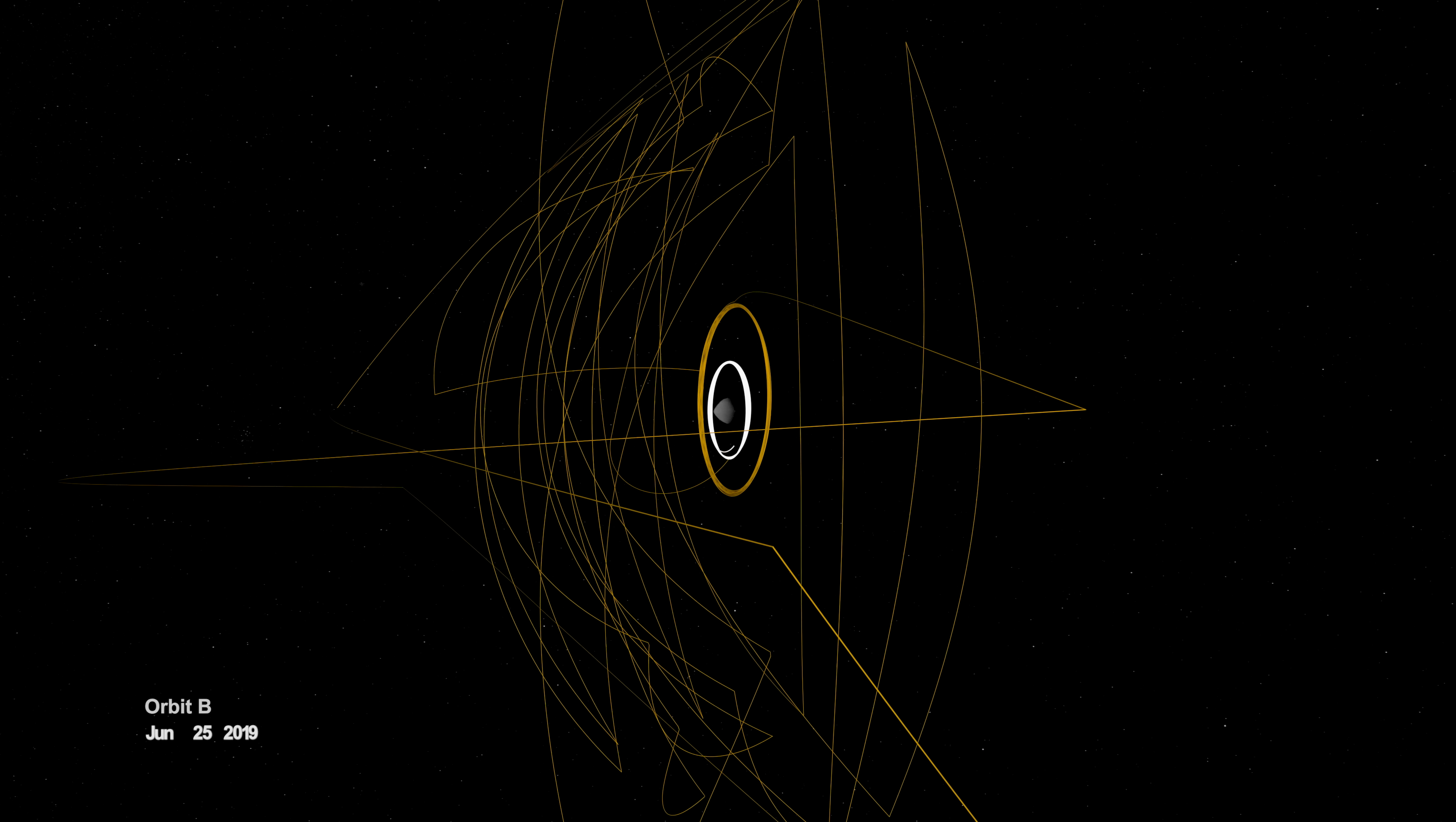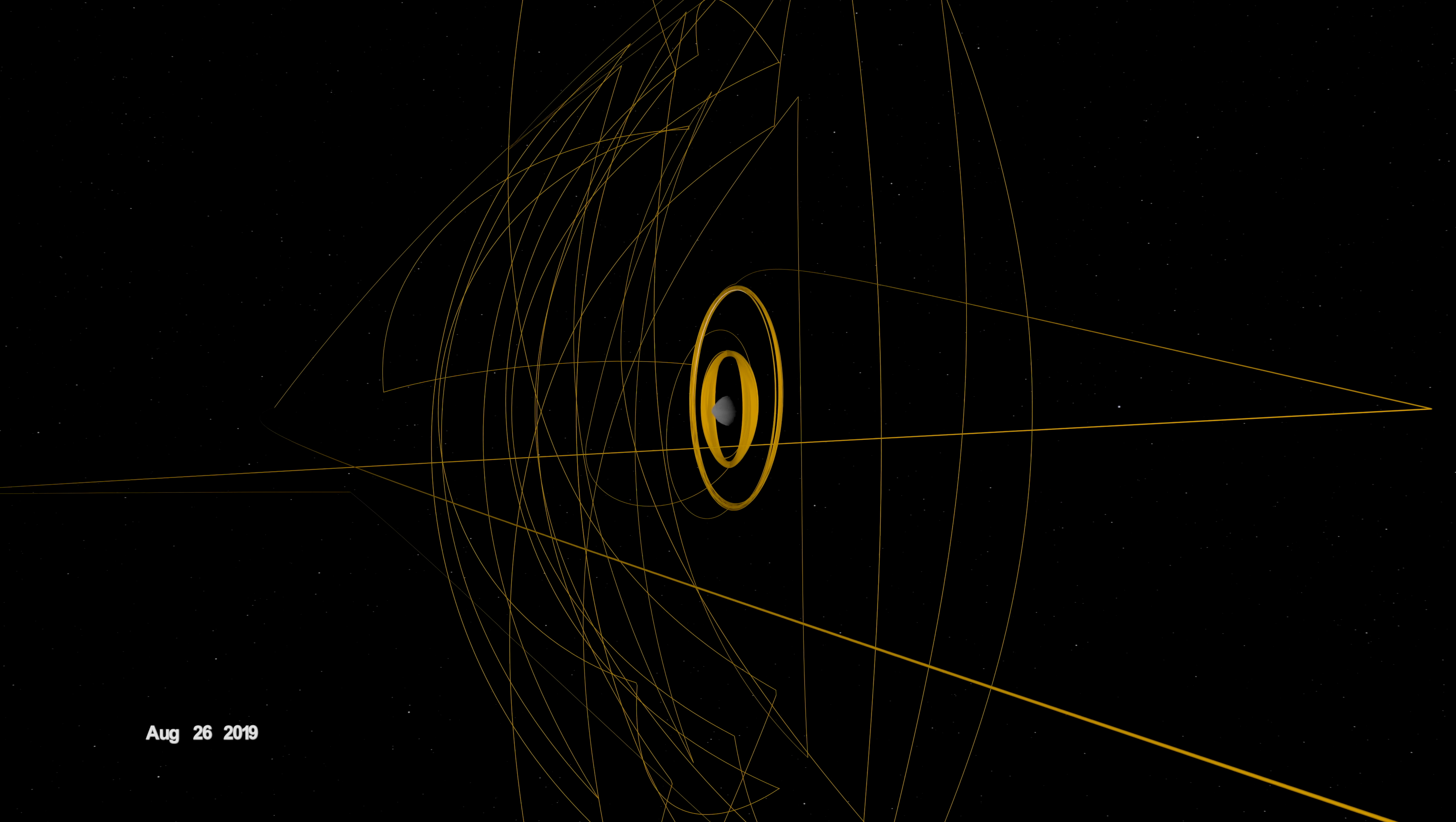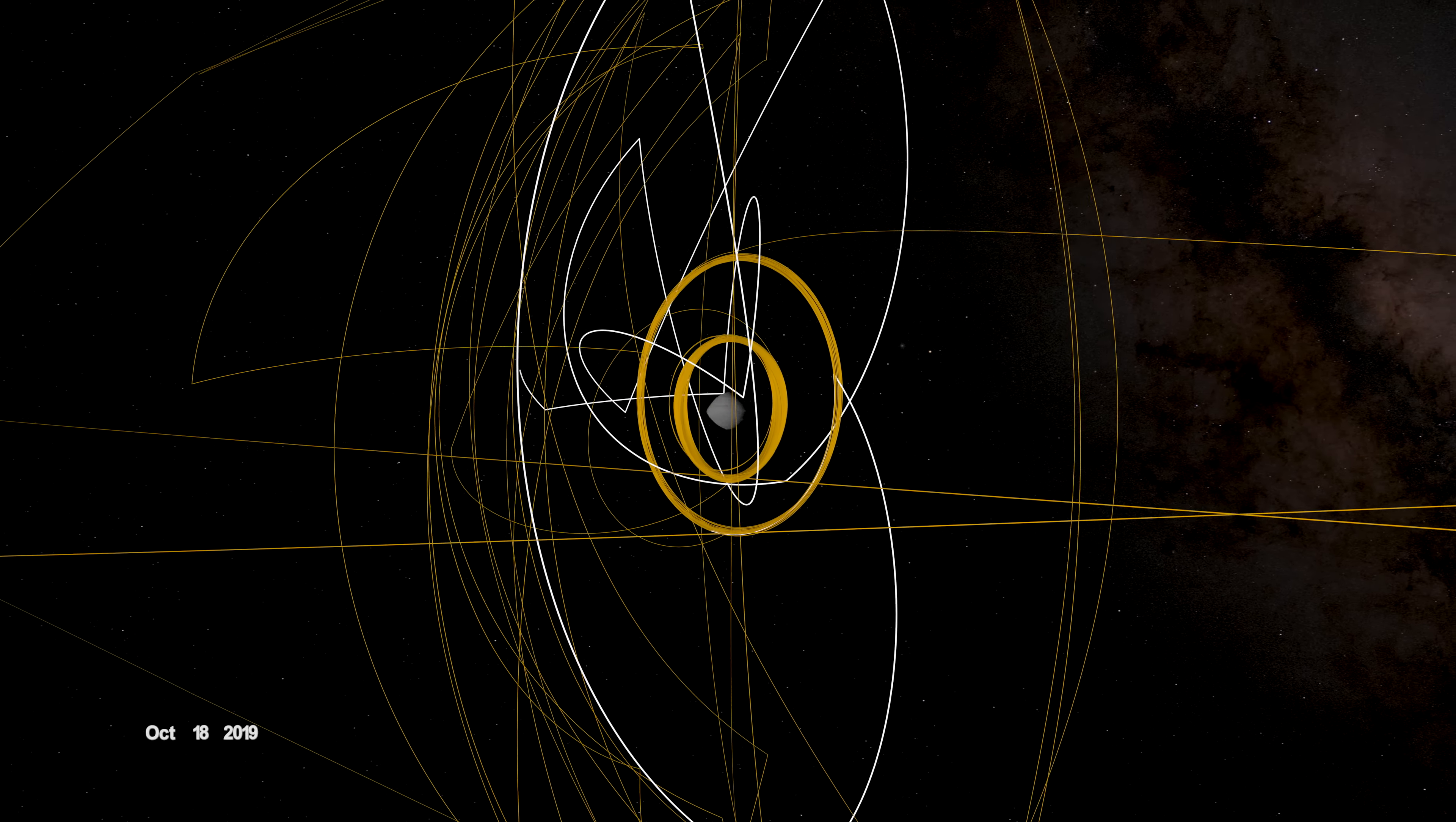On June 12, the spacecraft entered a new orbit at an altitude of just 680 meters, setting another record and establishing a home orbit for the remainder of the mission. In September, it began reconnaissance on four candidate sample collection sites, potential locations on Bennu to touch down and collect a sample later in the mission.